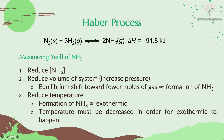On the left, you have 4 moles in total of reactants. On the right, 2 moles in total of product. So the equilibrium shifts toward the right, and you will have more NH₃.